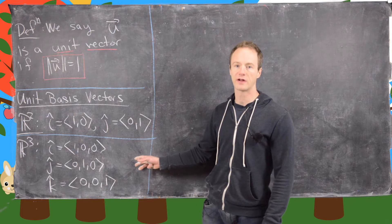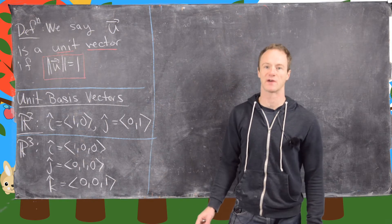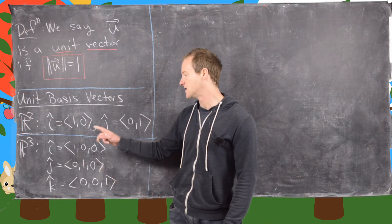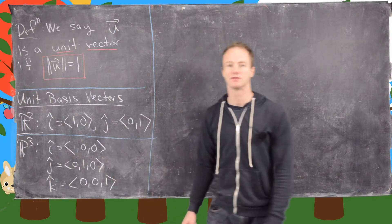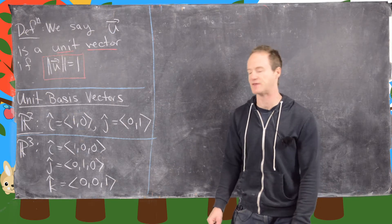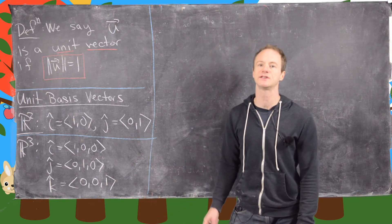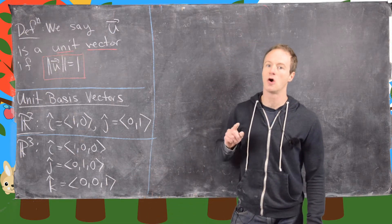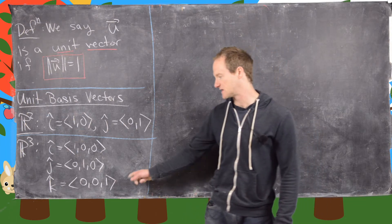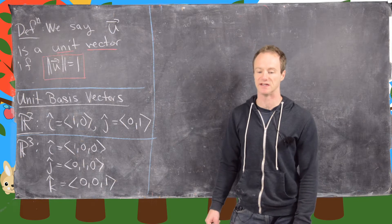In R3, in three dimensions, we have three important unit basis vectors: i-hat, j-hat, and k-hat. i-hat is (1, 0, 0), one unit in the direction of the x-axis. j-hat is (0, 1, 0), one unit in the direction of the y-axis. And k-hat is one unit in the direction of the z-axis.